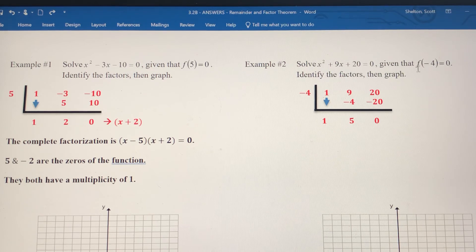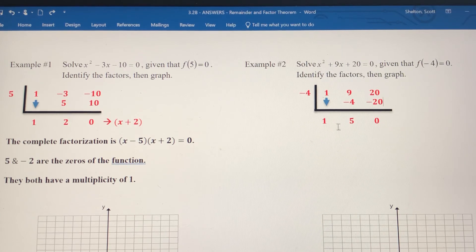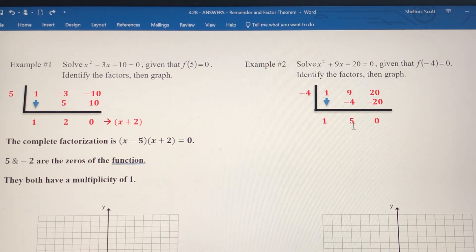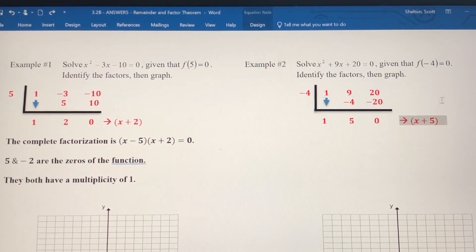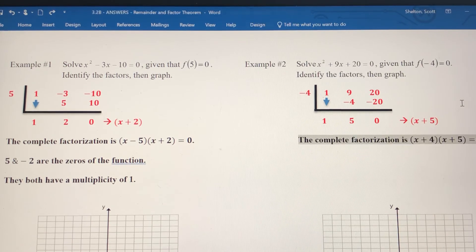We said our first factor was x plus 4, based on negative 4 being a 0. My second factor comes from these two values: this is the coefficient of x, this is the constant. They're both positive, so x plus 5 is my second factor. The complete factorization is going to be x plus 4, x plus 5.